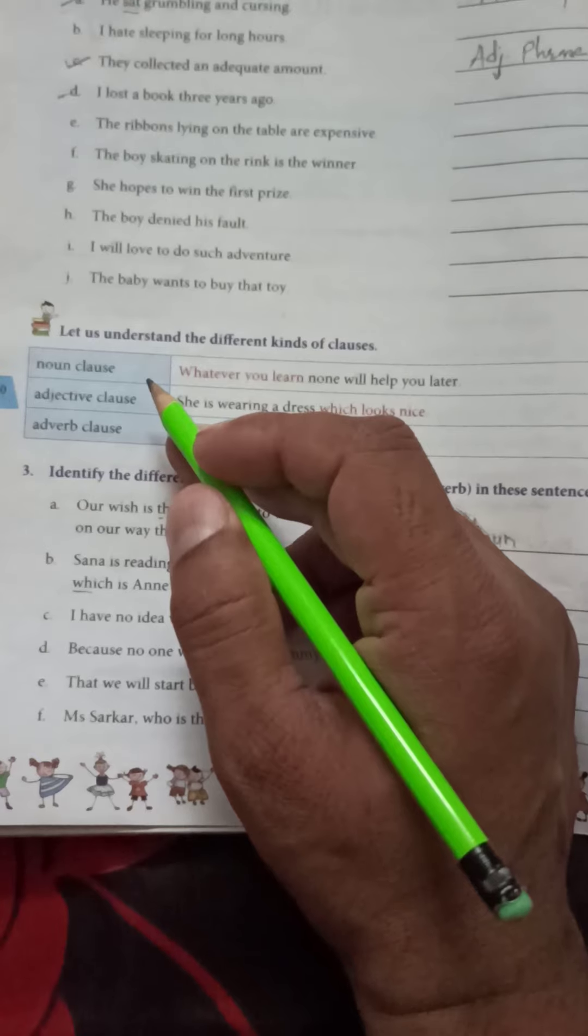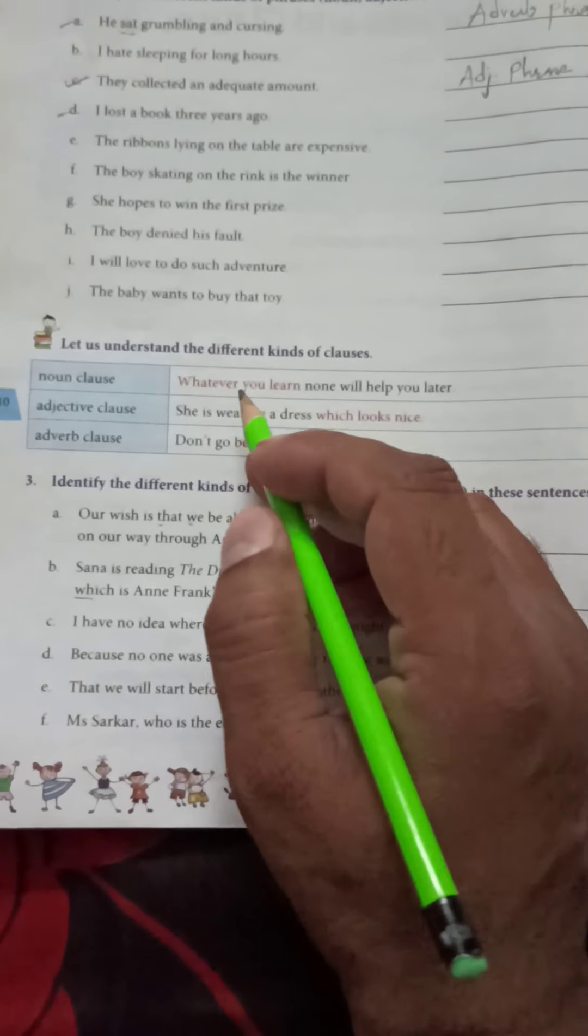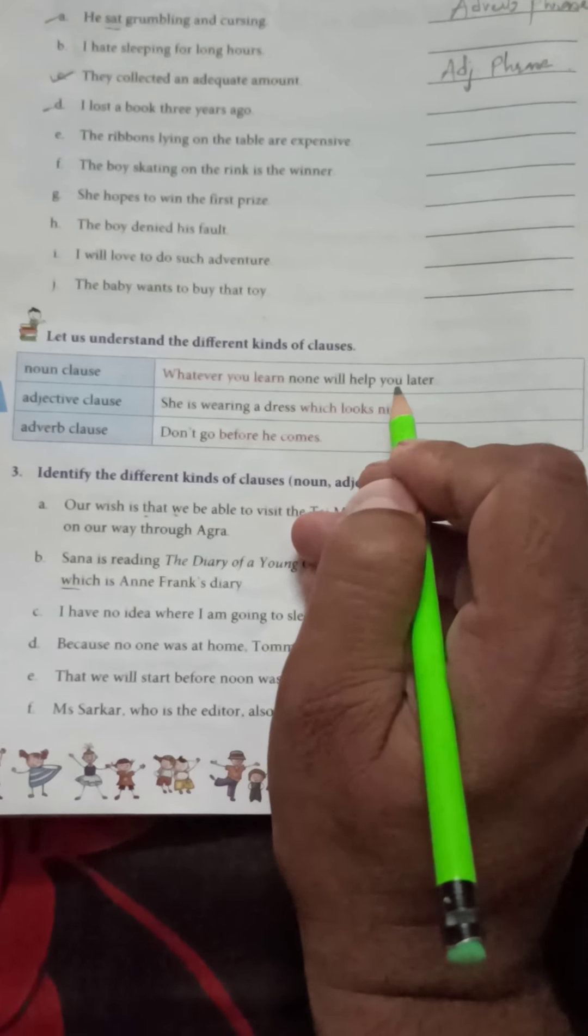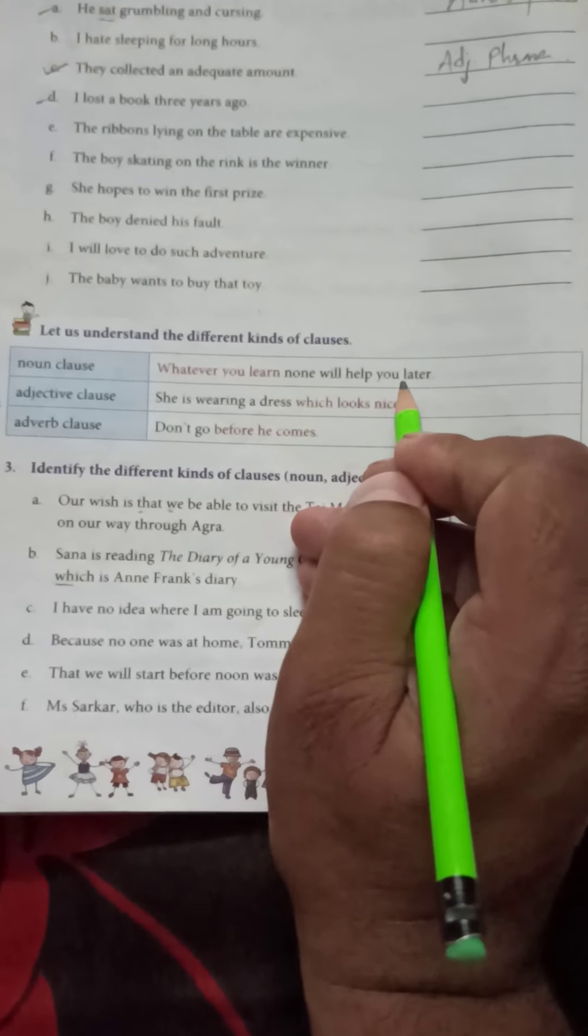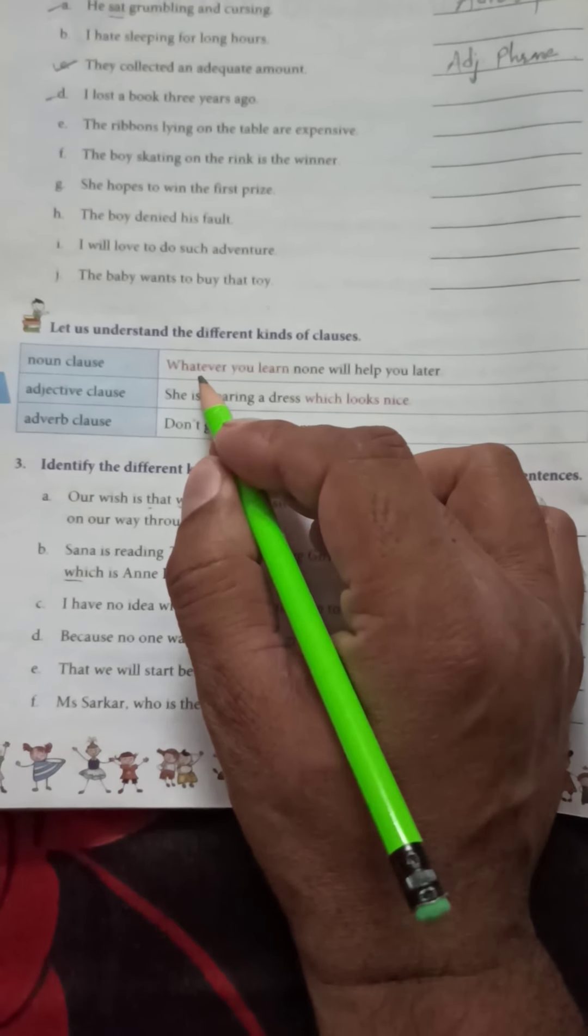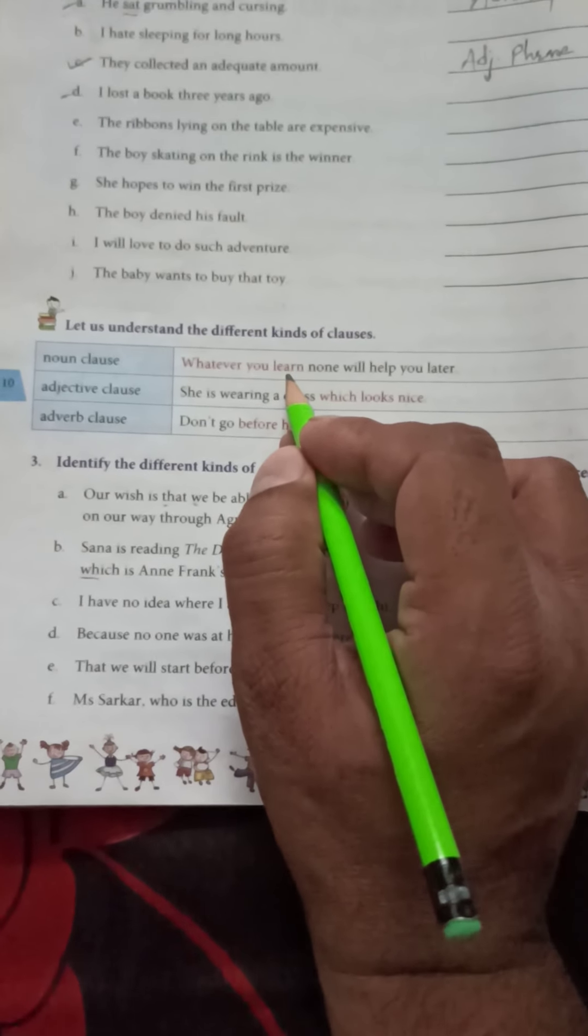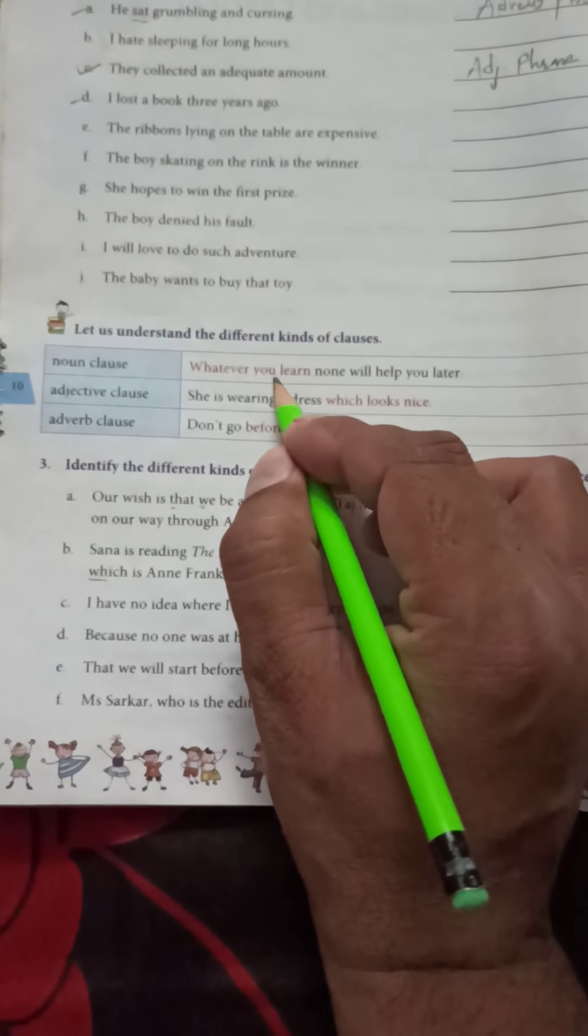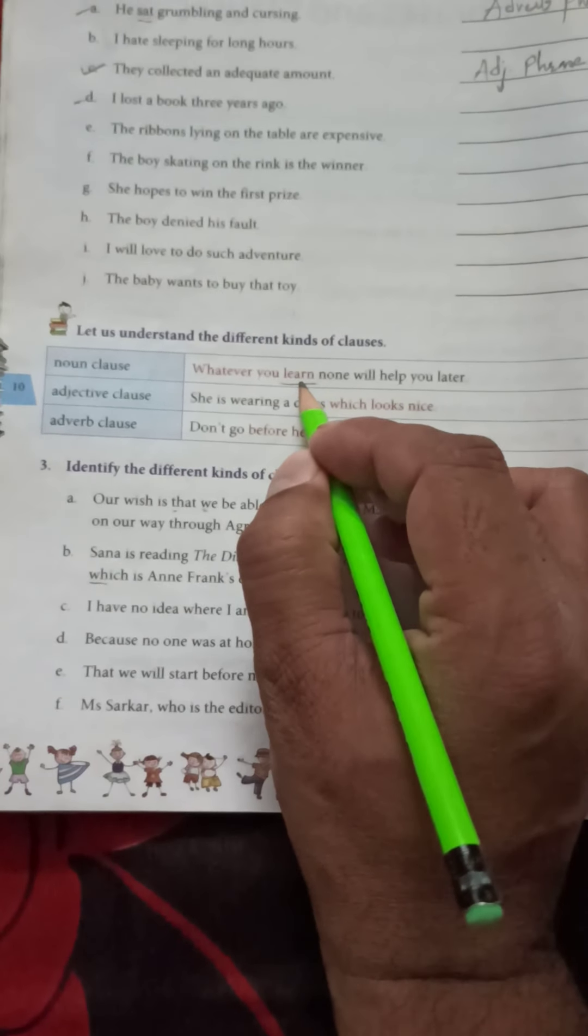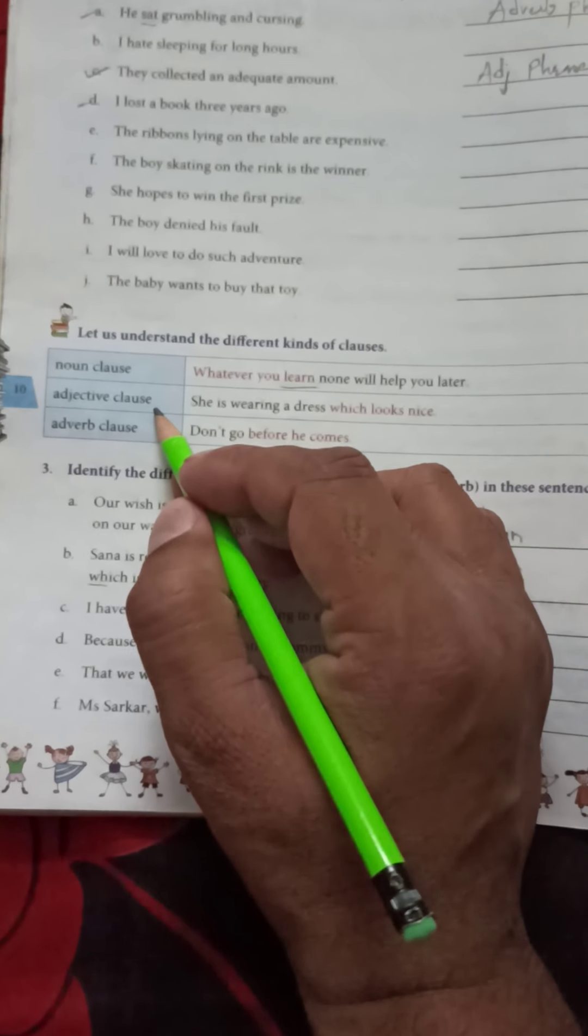Here, example: whatever you learn now will help you later. Here 'learn' is used as a noun, which noun? Abstract noun. So 'whatever you learn' is noun clause.